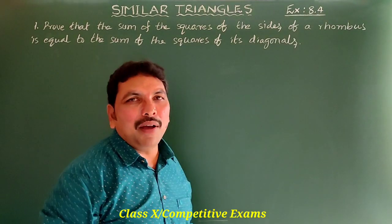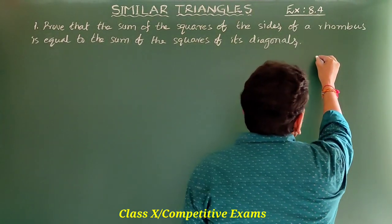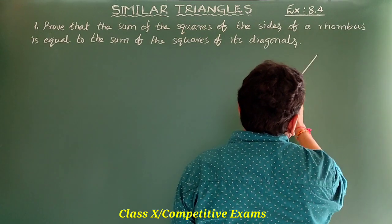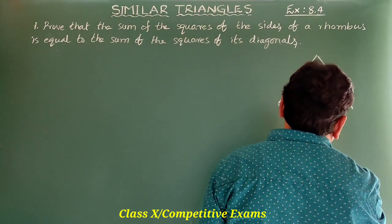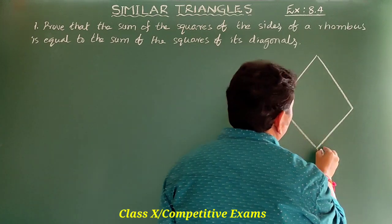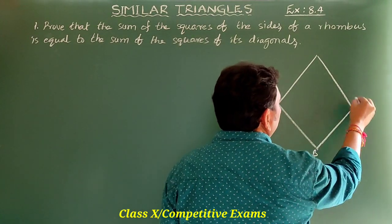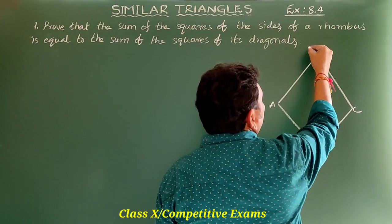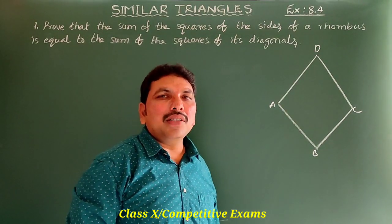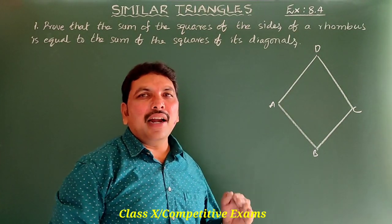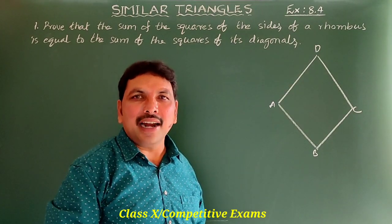First, according to the problem, let ABCD be a rhombus. Do you know the properties of a rhombus? In a rhombus, all the sides are equal and the diagonals bisect each other at right angles.